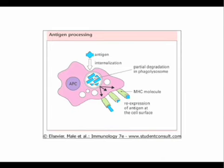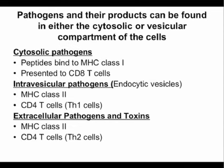Last week you talked about antigen processing and presentation. There are dedicated cells known as antigen-presenting cells — for example, macrophages, B-cells, and dendritic cells. These cells take up antigen, process them in a variety of different ways, and you end up with peptides that are displayed in MHC class 1 or class 2 molecules on the surface of the cell.